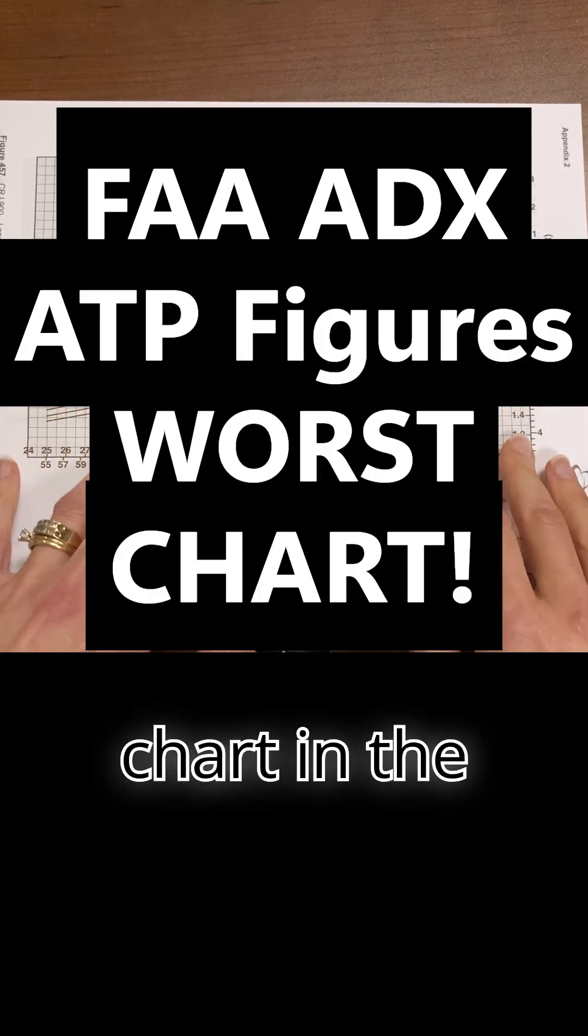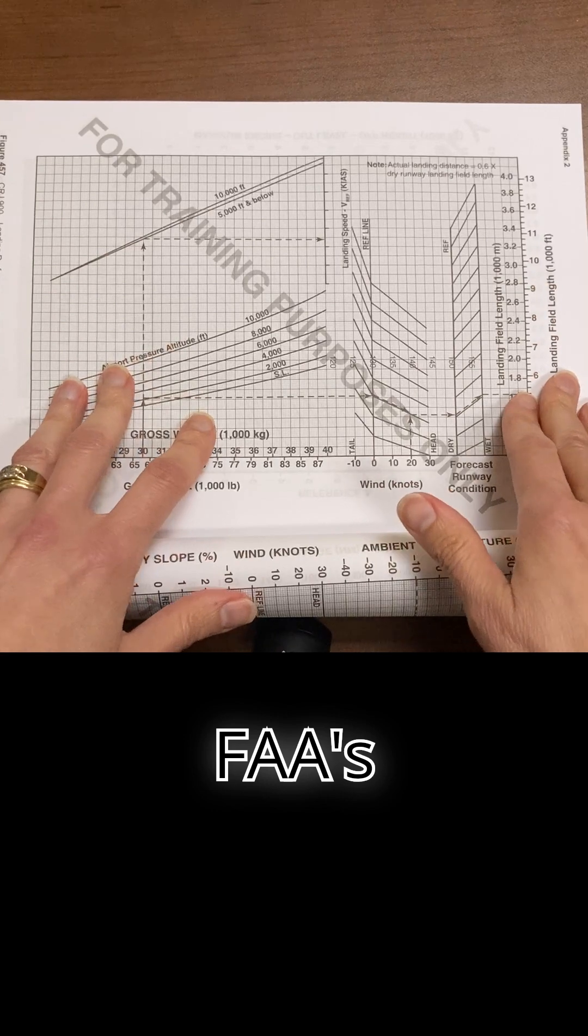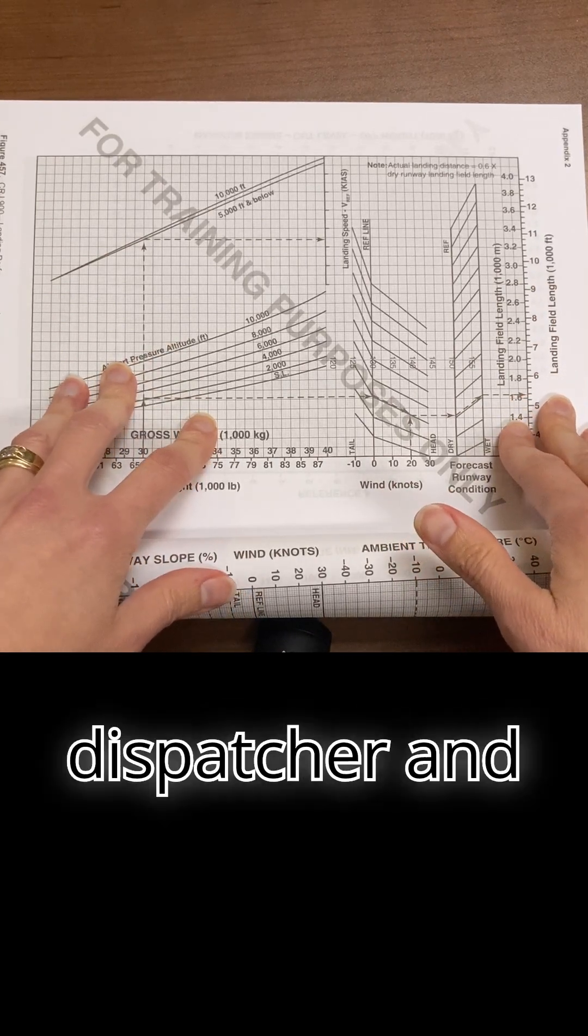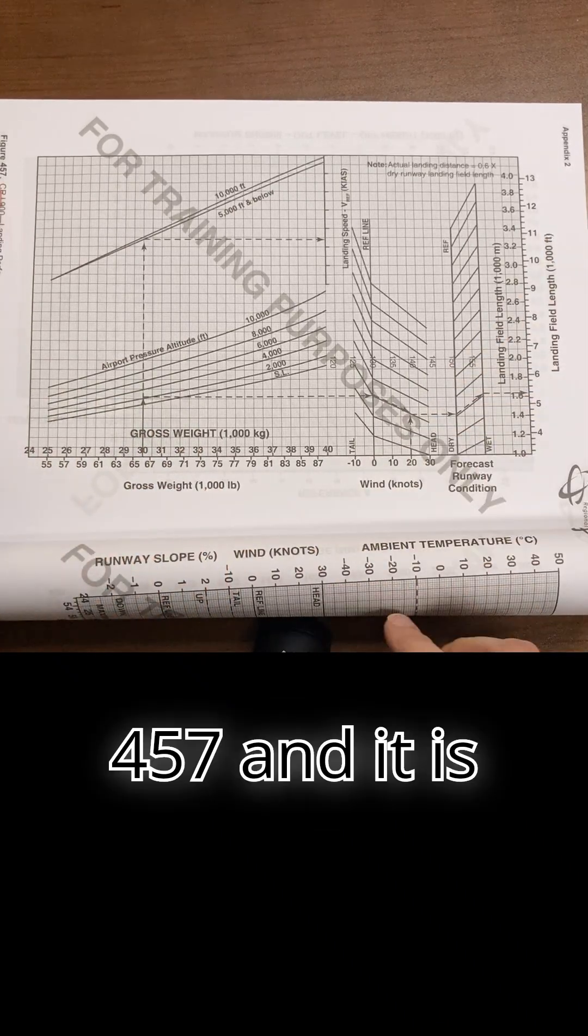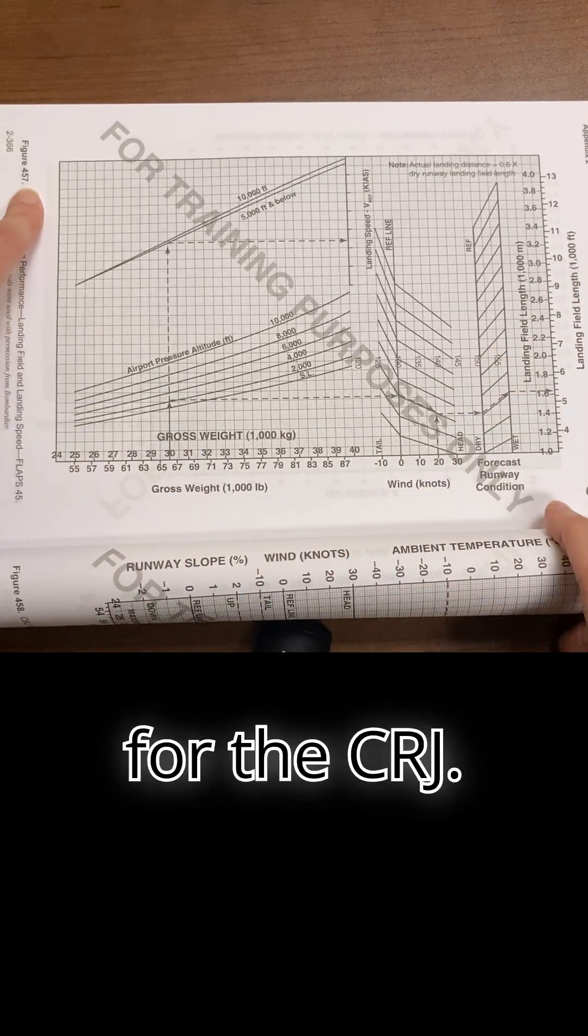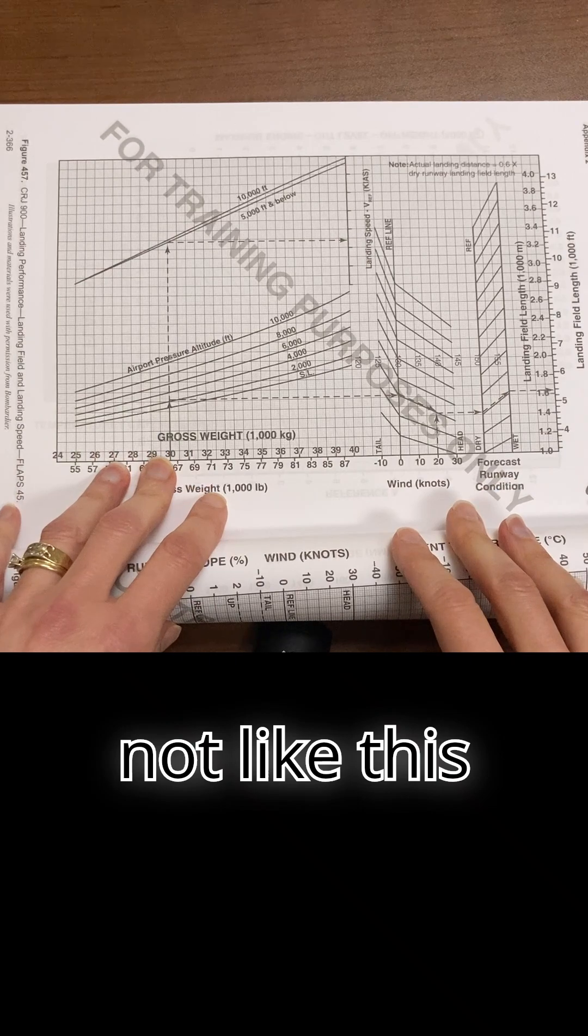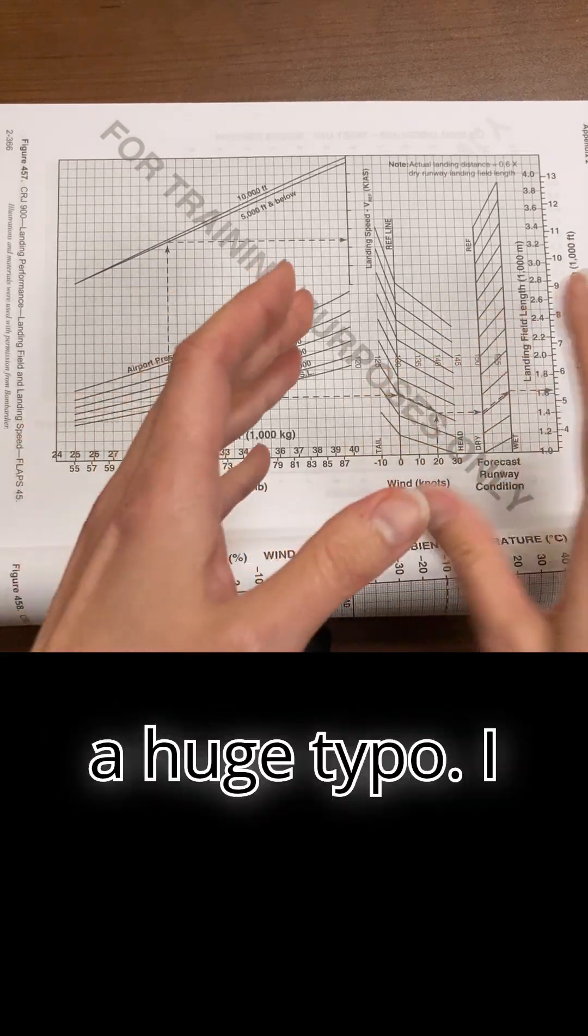This is the absolute worst chart in the FAA's repertoire of aircraft dispatcher and ATP testing. It is figure 457, and it is for the CRJ. Why do I not like this chart so much? Because it has a